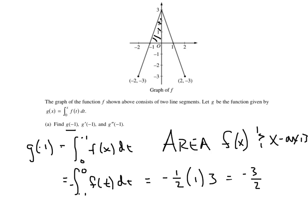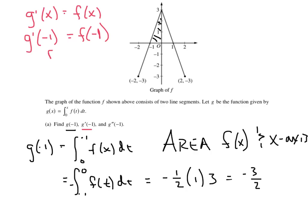Let's do g prime of negative 1. We know that g prime of x is simply f of x, so when they want g prime of negative 1, all we do is evaluate f of negative 1. How would you summarize that question? We're simply going to read the value of the graph. When x equals negative 1, right there, we get an answer of 0.